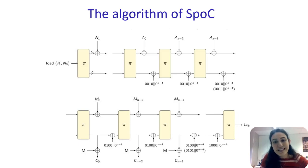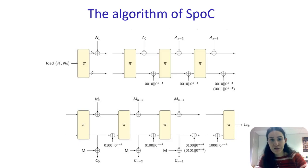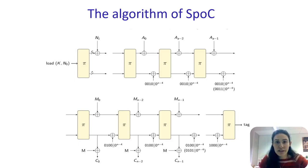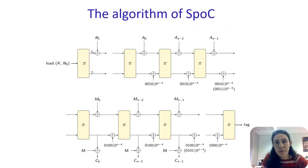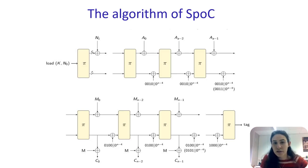The initialization is the only part that is different for the two SPOC versions. For SPOC 64, after loading the key and half of the nonce to the state, the permutation is applied and then the second half of the nonce is added. For SPOC 128, this phase consists only of loading the key and the nonce to the state.